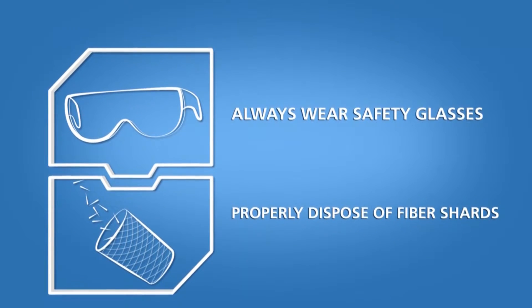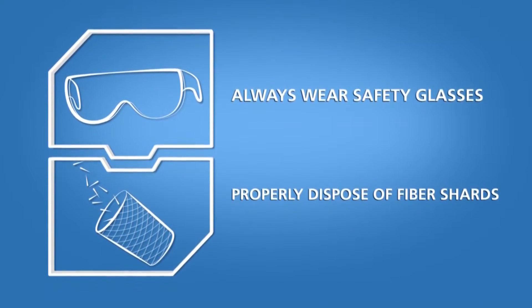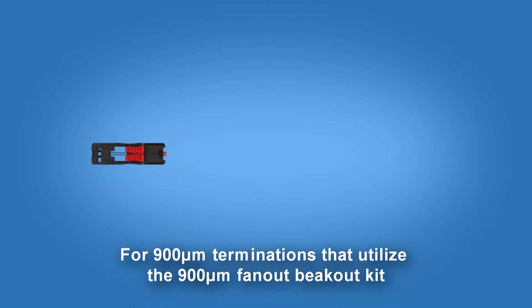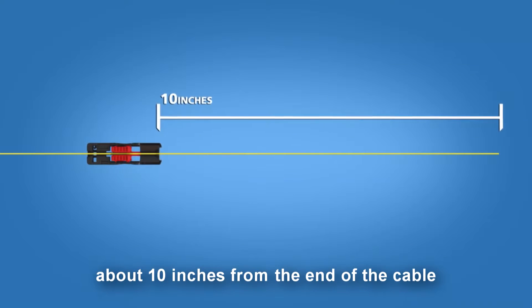Properly dispose of fiber shards when handling and cleaving optical fibers. For 900 micron terminations that utilize the 900 micron fan-out breakout kit, begin by placing the cable clamp onto the cable about 10 inches from the end.